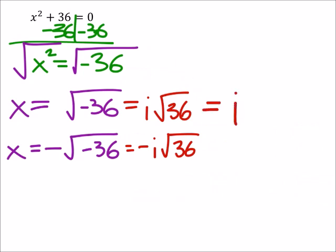Some of you guys know that 36 is a perfect square. The square root of 36 is just 6. So I guess I could just write that as 6i. And then this one would be negative 6i.